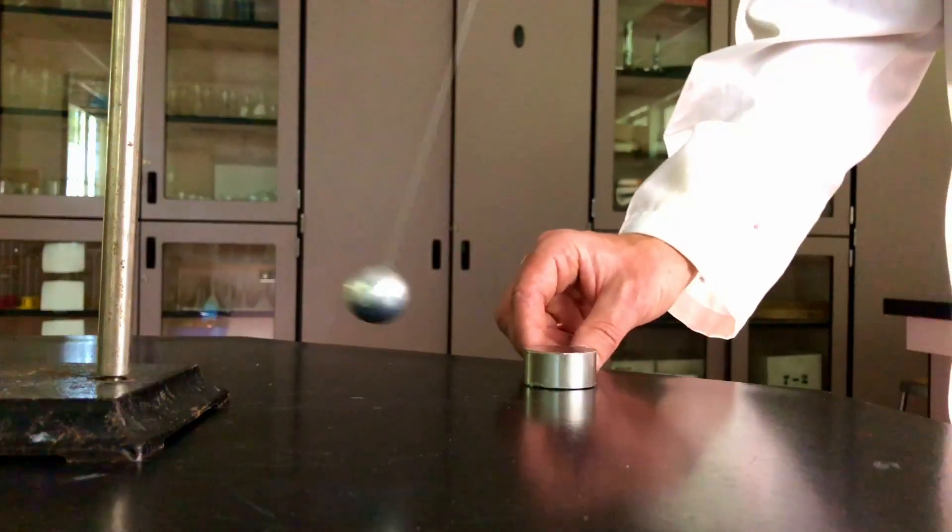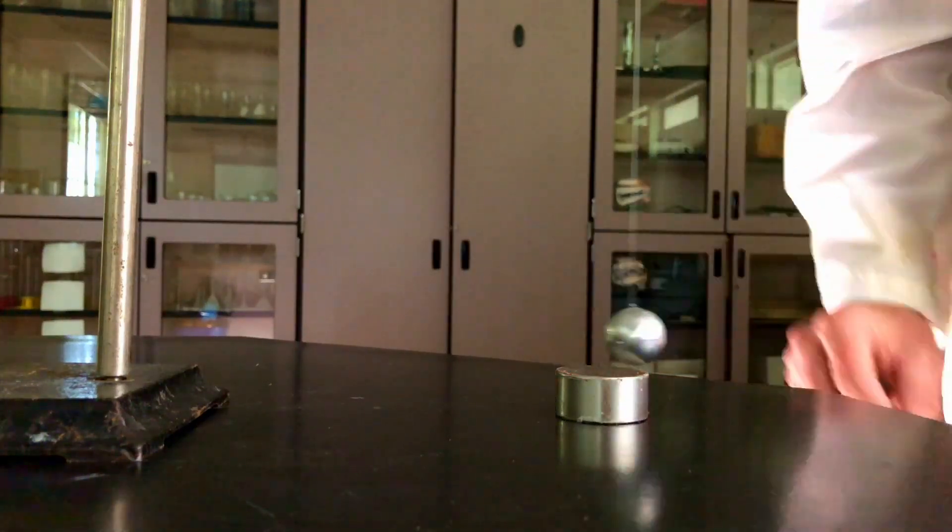The stationary magnet doesn't do anything. Then I put a string through that aluminum ball and started it in pendulum motion. As it was swinging, it has momentum. I slid the magnet right underneath it and noticed what happens to the ball. What's going on with the conservation of momentum? Where's the momentum going?